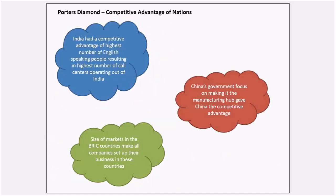In this slide, let's look at some examples. India had a competitive advantage in having the highest number of English-speaking people, resulting in the highest number of call centers operating out of India — a key competitive advantage that drove growth in that industry. China's government focus on making it the manufacturing hub gave China its competitive advantage; the lowest-price goods produced anywhere in the world are majorly manufactured in China. Thus, India is primarily a service provider while China has its competitive advantage in the manufacturing sector.